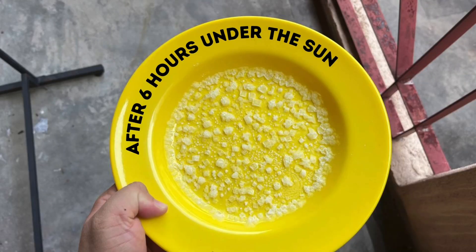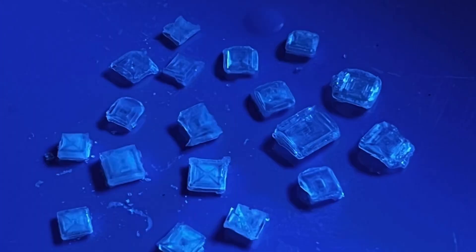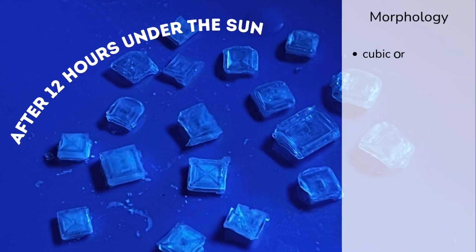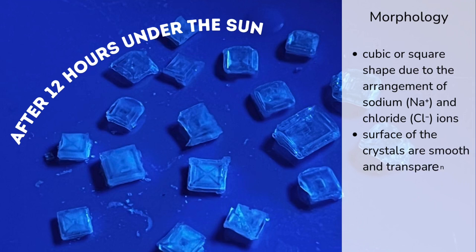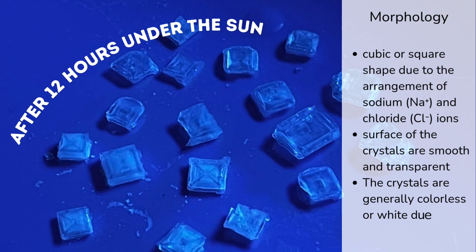This is the solution after 6 hours under the sun, and after 12 hours under the sun. The morphology includes a cubic or square shape due to the arrangement of sodium and chloride ions. The surface of the crystals are smooth and transparent, and the crystals are generally colourless or white due to the purity of the salt.